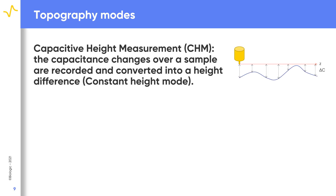On the Biologic SKP 470, there are two experiment types which can be used to measure sample topography. The first is the capacitive height measurement, or CHM, which is a constant height method of measuring the sample topography. In this mode, the probe Z position is maintained throughout the measurement. As the probe-to-sample distance changes, the measured capacitance changes, and it is this change in probe-to-sample distance, determined from the change in capacitance, which is plotted. Because CHM measurements are constant height, they are most useful for flat samples, and can also be performed in sweep scan mode for fast topography measurements.